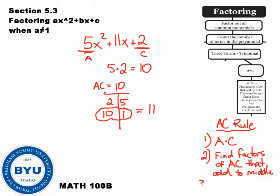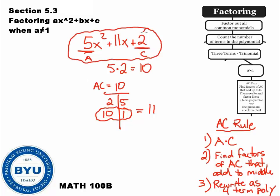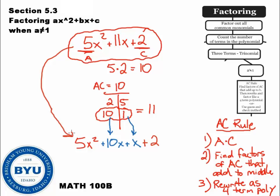Step number 3 is to rewrite as a four-term polynomial. We're going to rewrite this entire expression, but using a new middle term. So I write 5x squared, and instead of putting 11x, we use our new factors: plus 10x plus 1x. Then lastly we put in plus 2. All I did was rewrite this with the new middle term — the only thing that changed is the middle term.